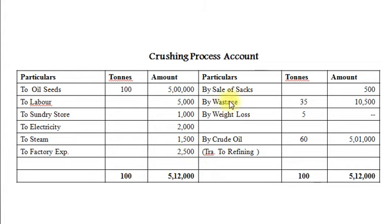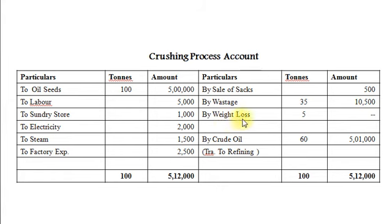On the credit side: by sale of sacks — it is packing material unused, sold for Rs. 500. Wastage 35 tons, realized value Rs. 10,500.